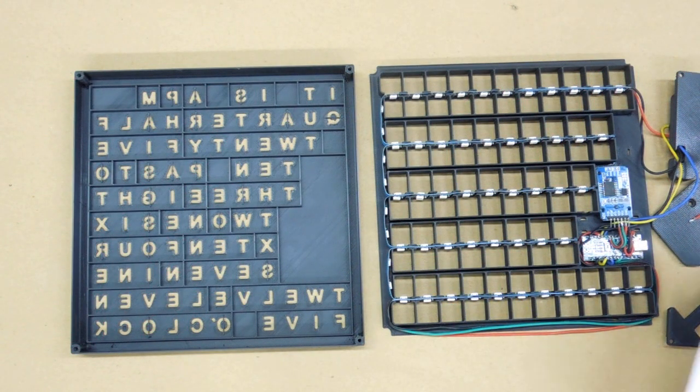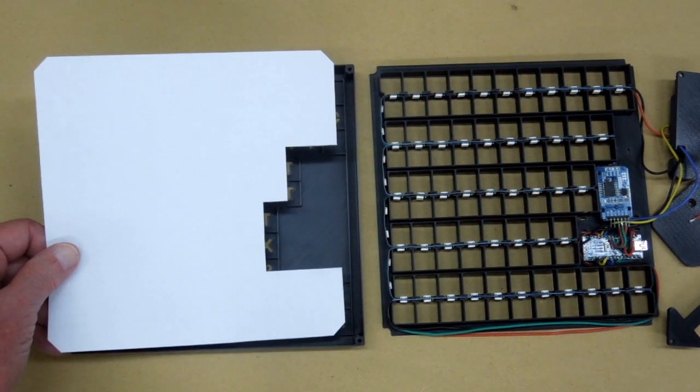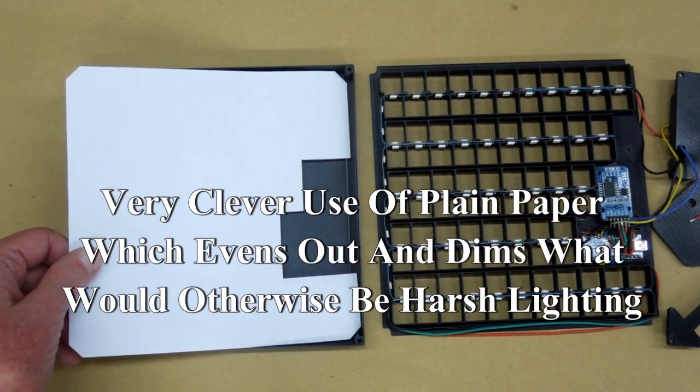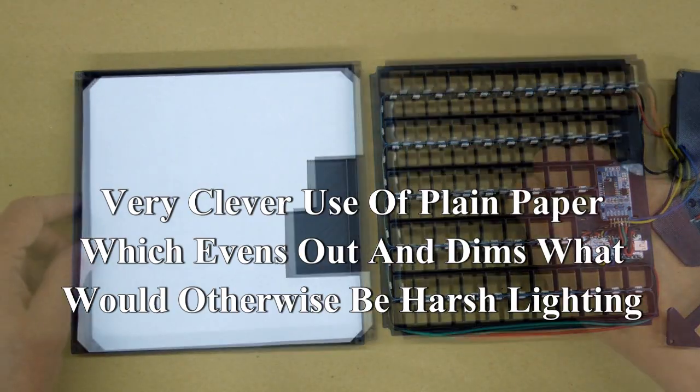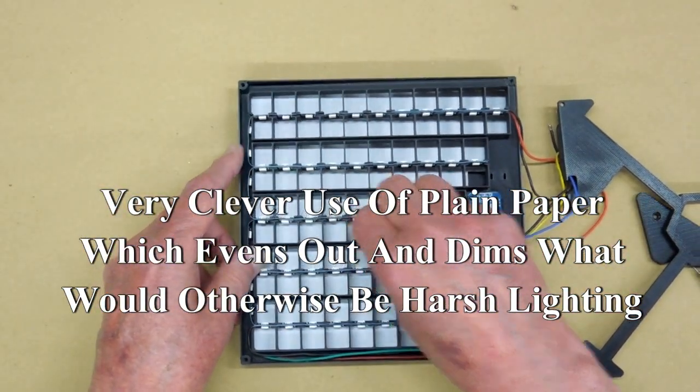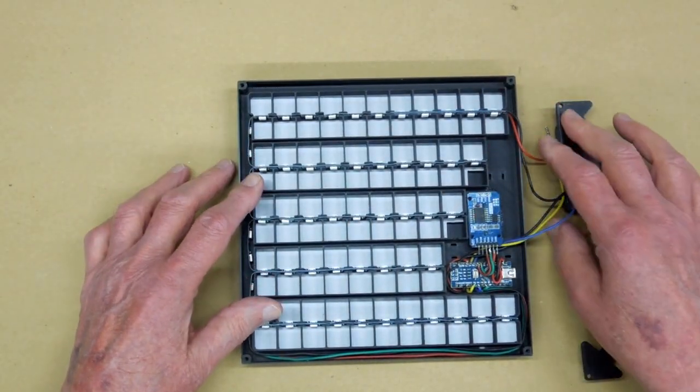You're provided a pattern for a diffuser. This is just a piece of printer or typing paper. This goes on top of there like so.